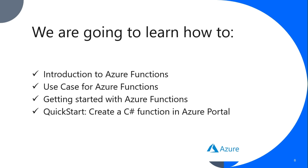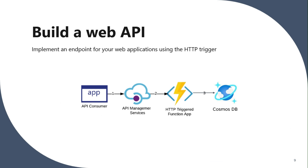We'll discuss what are all the use cases we can use within Azure functions. With an Azure function you can build a web API. In this diagram you can see an API being built using an HTTP trigger function app, connected to a Cosmos DB, exposed by API Management, and consumed by a web app.